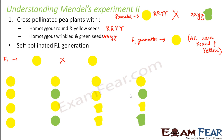In a monohybrid cross it was simpler because only one trait was considered, so there were fewer F2 outcomes. But here the possibilities were more, and different traits were combined with different traits. Mendel wanted to understand why this happened.